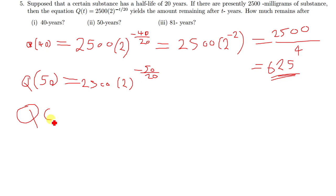This applies to the last part here, which is Q(81). So Q(81) is equal to 2500 times 2 raised to power negative 81 over 20. Then you simplify that and you are done.